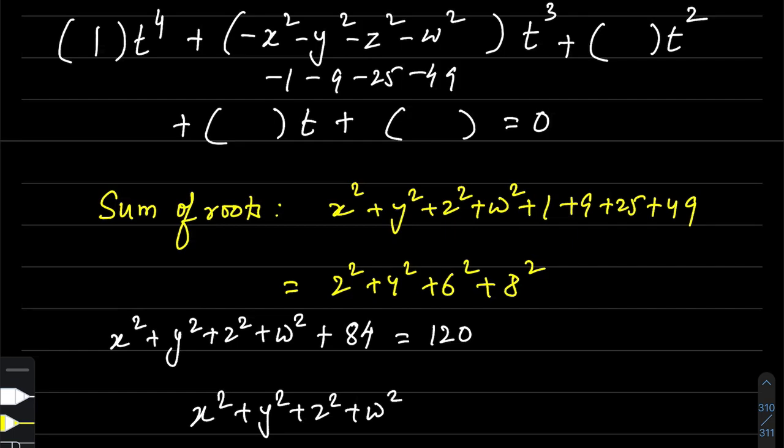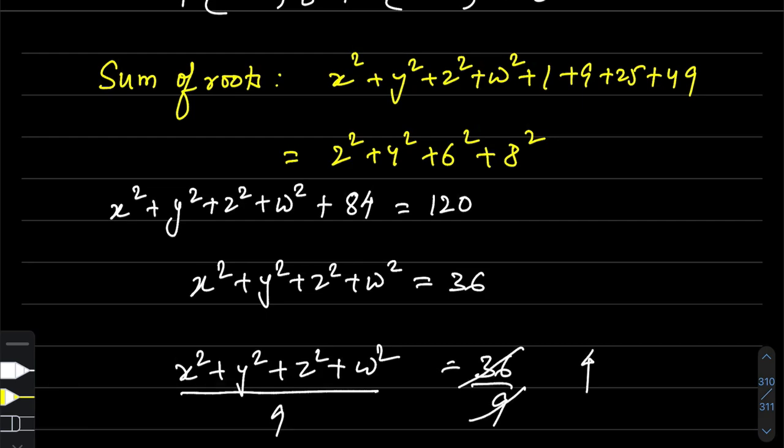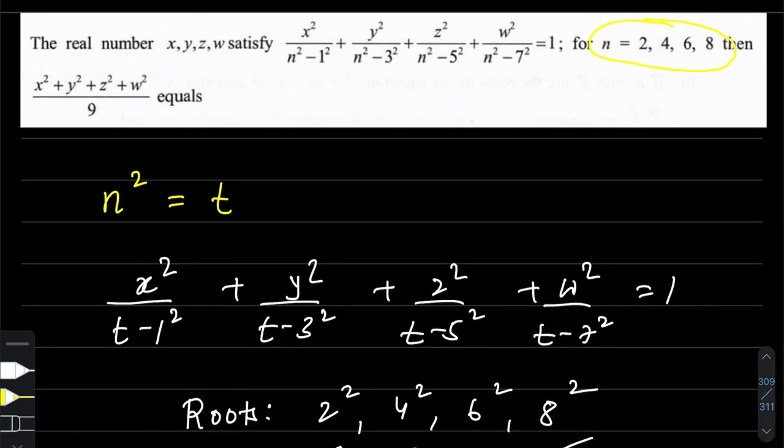We know the roots are 2², 4², 6², and 8², which sum to 4 + 16 + 36 + 64 = 120. Therefore x² + y² + z² + w² = 120 - 84 = 36. The question asks for this divided by 9, which equals 4.